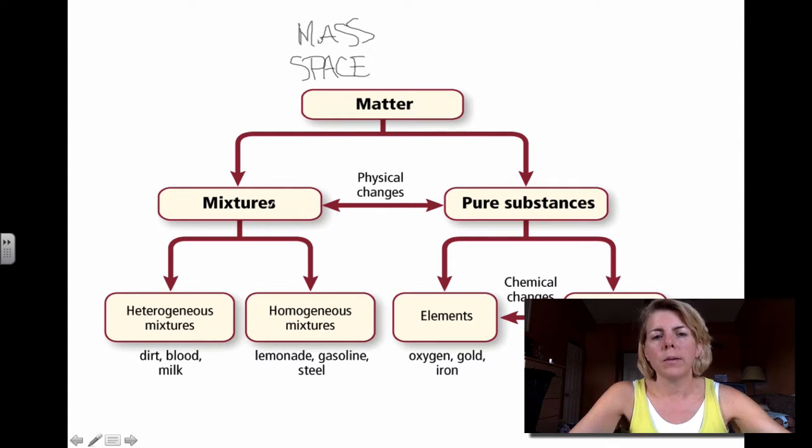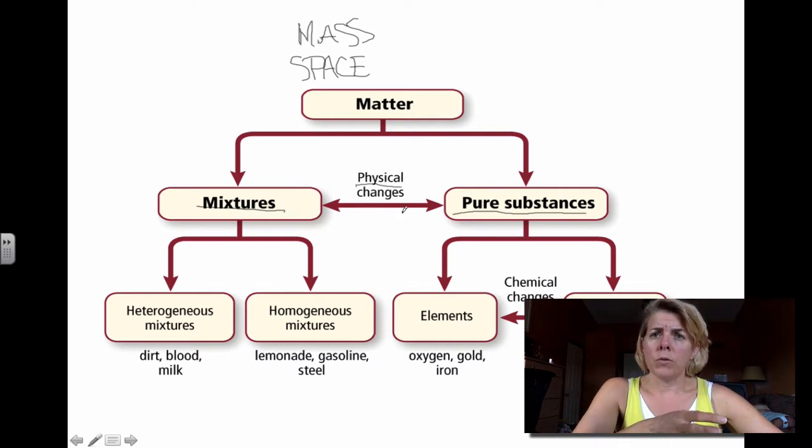Now we have two types of matter. There's pure substances, which we've talked about in the beginning, and then mixtures. Notice that when you're looking at pure substances versus mixtures, the way that you can separate out those two types of matters is through physical changes. So you're changing the state of the substance or matter to help separate out different components.